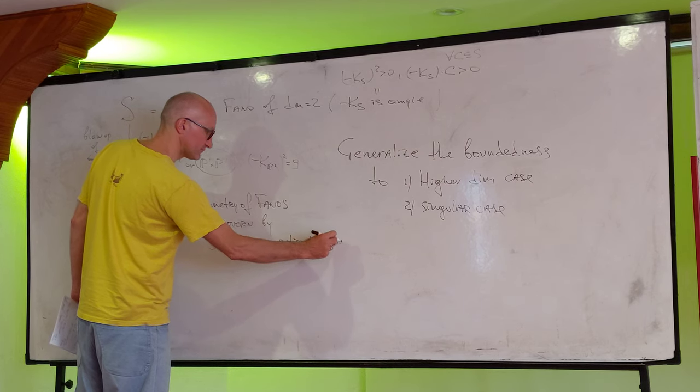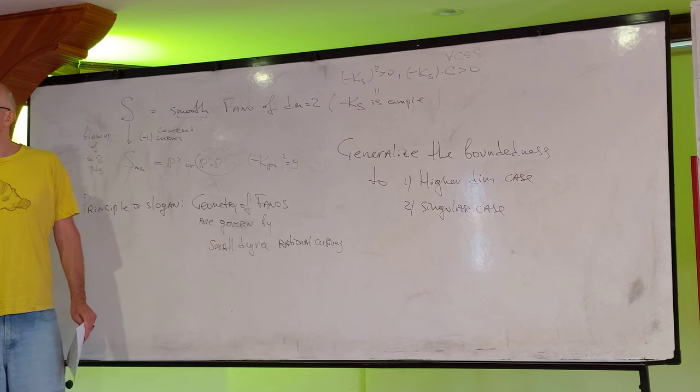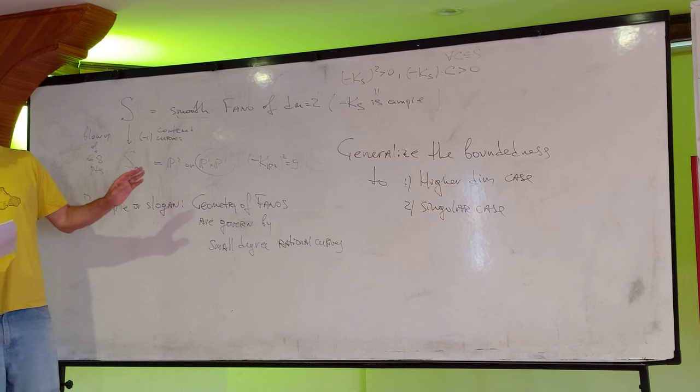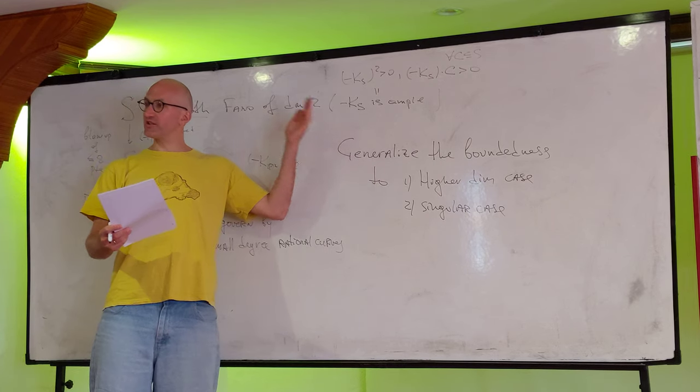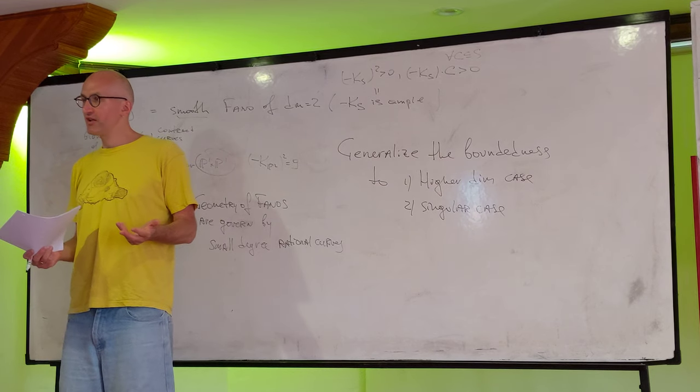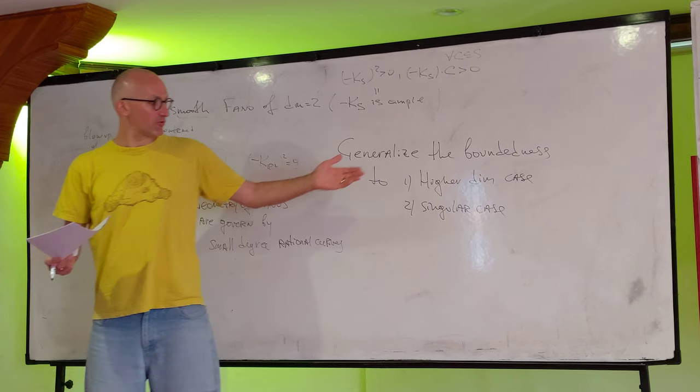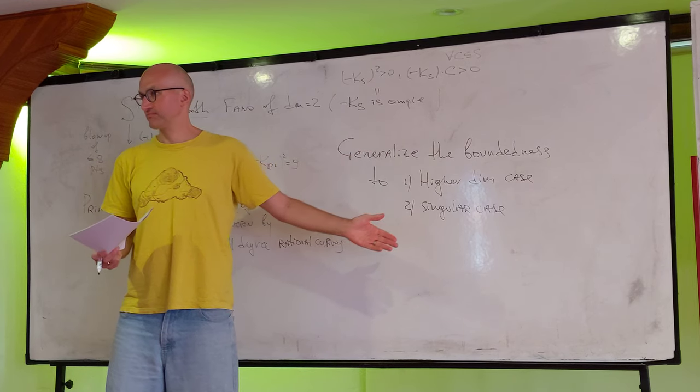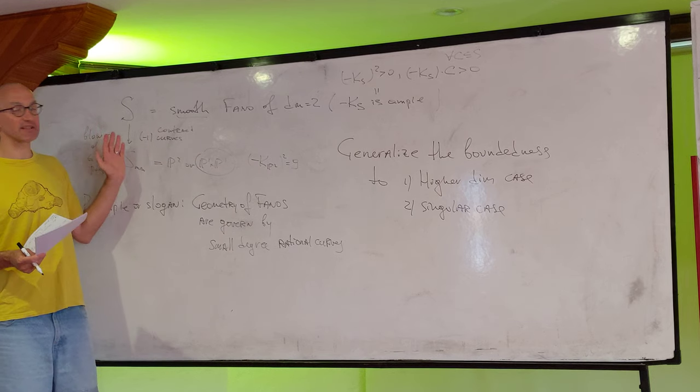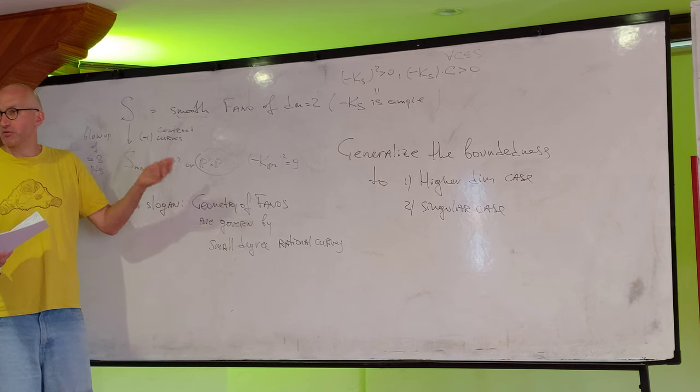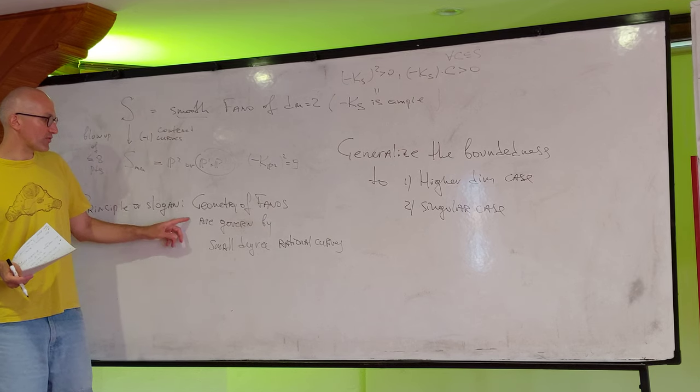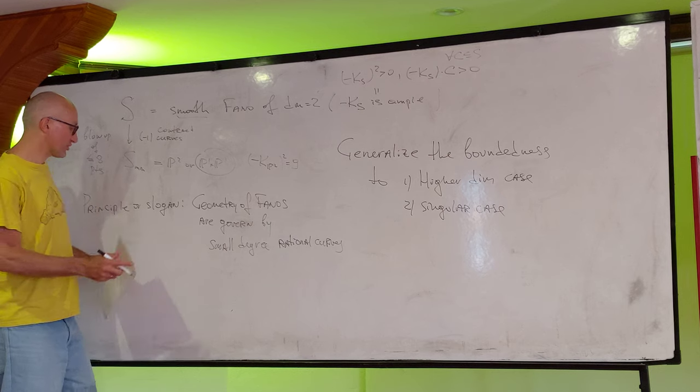You are doing one or two? What are you discussing right now? I'm discussing right now everything. This is the goal. Generalize this. Which goal are you making? We want to find new proofs, which has a chance to be generalized to one of these cases. Just different proof of the same result, maybe weaker result. We don't need classification. We just need the boundedness. But maybe it will help to prove the same result in more general situation. So, geometry of fano variety is governed by small degree rational curves.